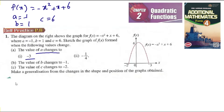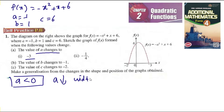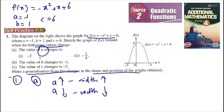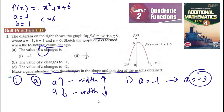Sketch when the value of a changes to negative 3. For a smaller than 0, when the value of a decreases, the width decreases; when the value of a increases, the width increases. So if a increases the width increases, if a decreases the width decreases. Here a changes from negative 1 to negative 3, so a decreases, which means the width decreases.